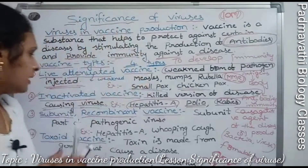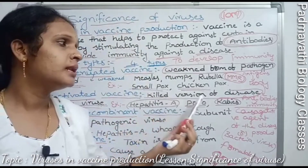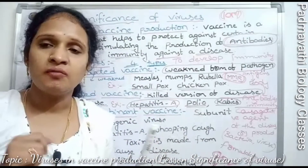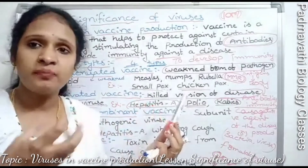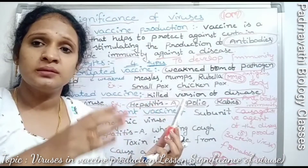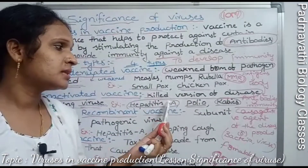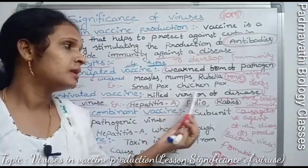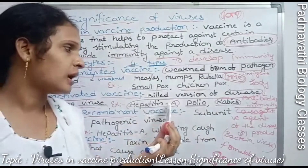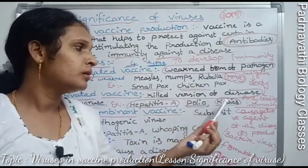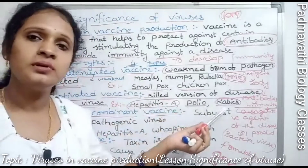To summarize inactivated vaccines: unlike live attenuated vaccines where the pathogen is weakened, here the viruses are in a killed version. This killed version of disease-causing viruses is used in the vaccine. Examples: hepatitis A, polio, and rabies.